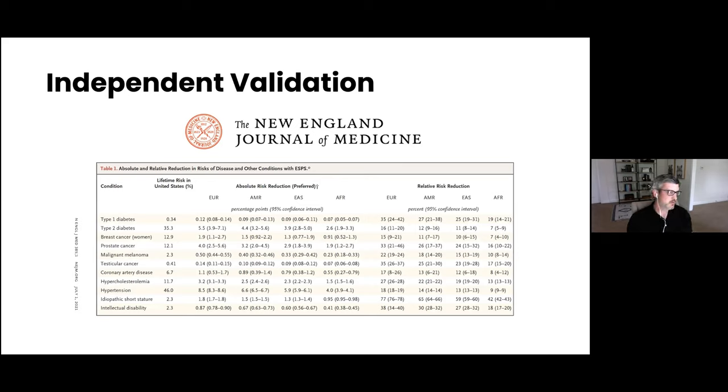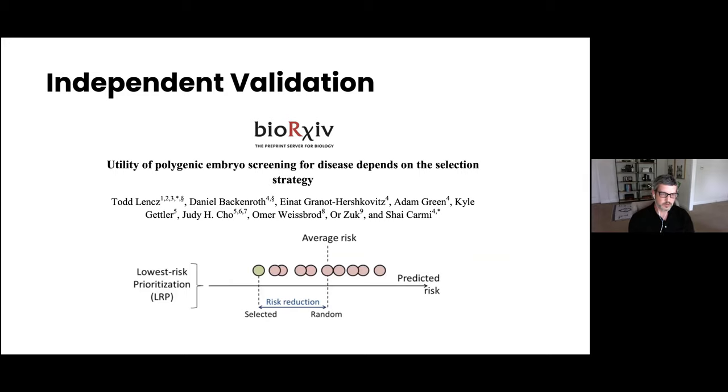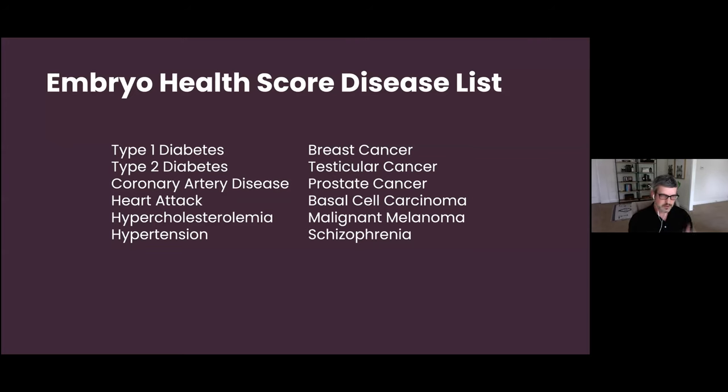And interestingly, what we've shown empirically has been validated by two additional groups. One was published in the New England Journal of Medicine, confirming significant relative risk reduction when performing genetic selection versus random selection. Another group demonstrated that this concept of ranking embryos actually does in fact work to produce a significant relative risk reduction. So the idea is that you prioritize the embryo that has the lowest risk for disease. This is what we refer to as an embryo health score. We're able to test for the diseases listed here, which include diabetes, heart disease, cancers, and schizophrenia.